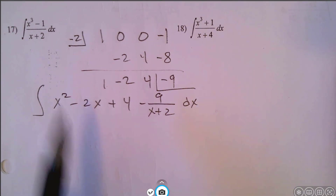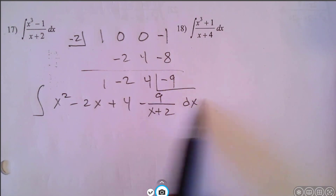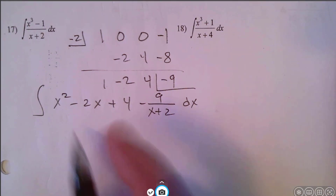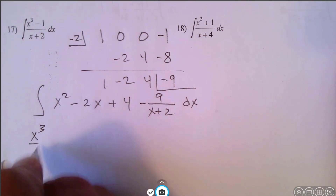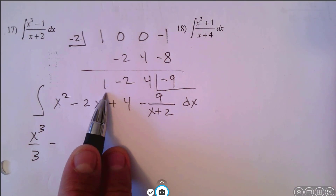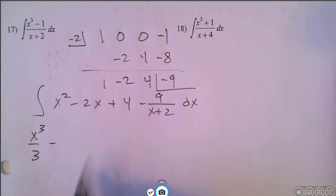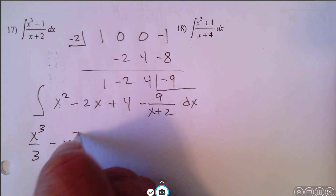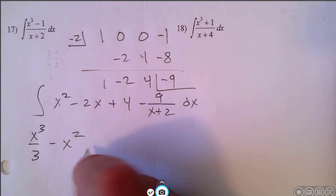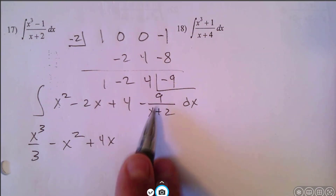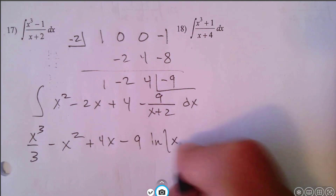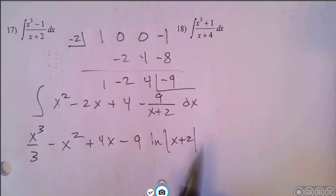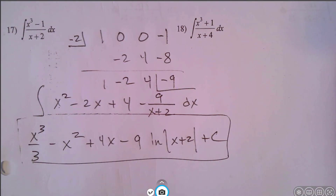Now we should be set — we're ready to take the antiderivative of each of these terms. We've got four parts. The antiderivative of x squared is going to be x cubed over 3, minus 2x goes to 2x squared divided by 2, so that's just minus x squared. 4 is going to go to 4x, and this one is going to give us negative 9 natural log of the absolute value of x plus 2, and then plus c at the end.